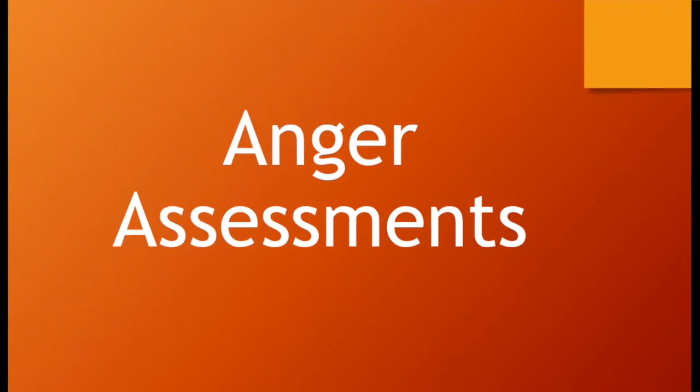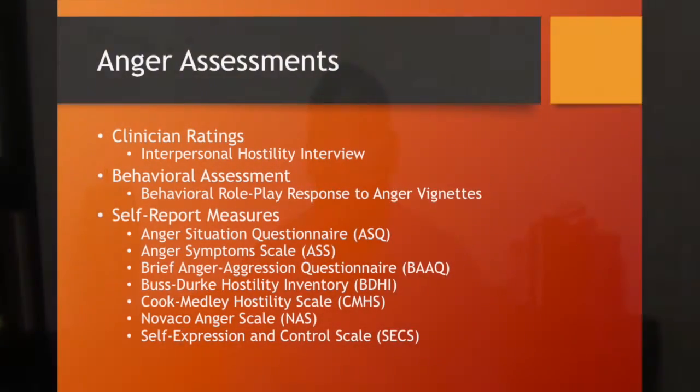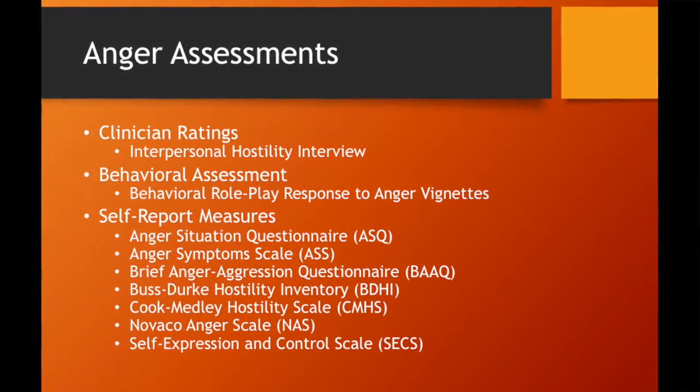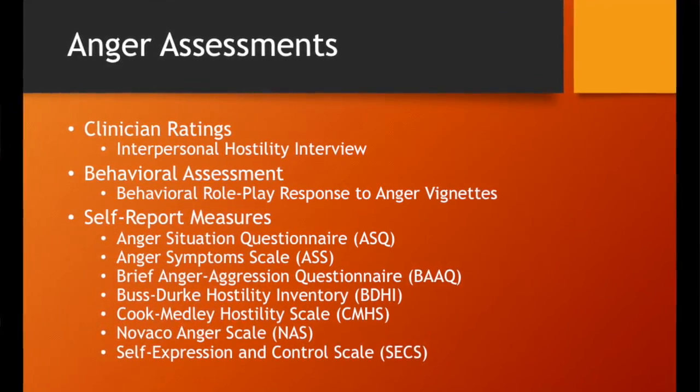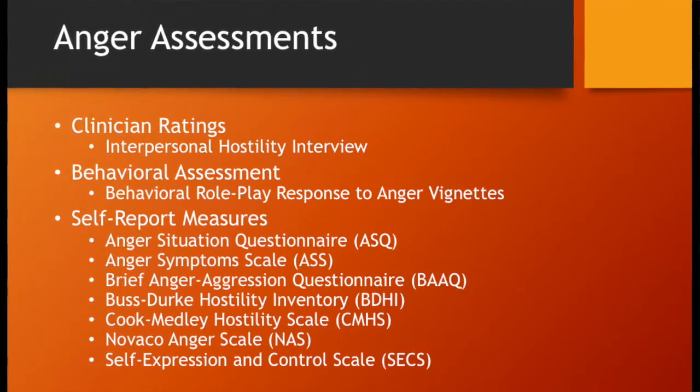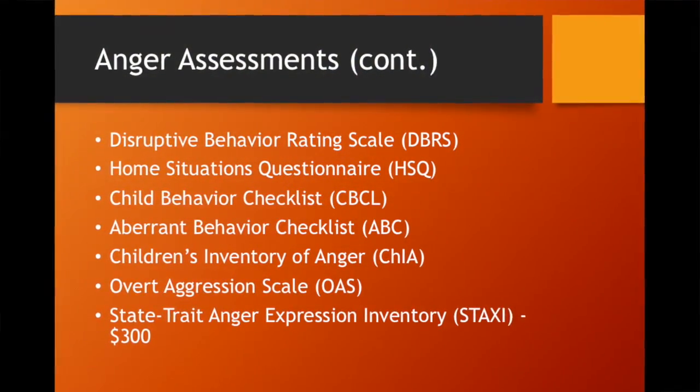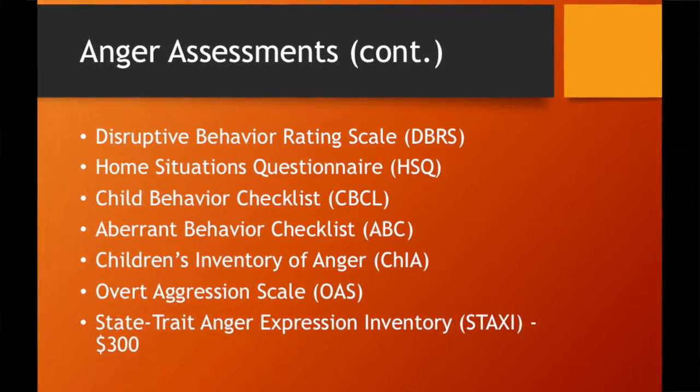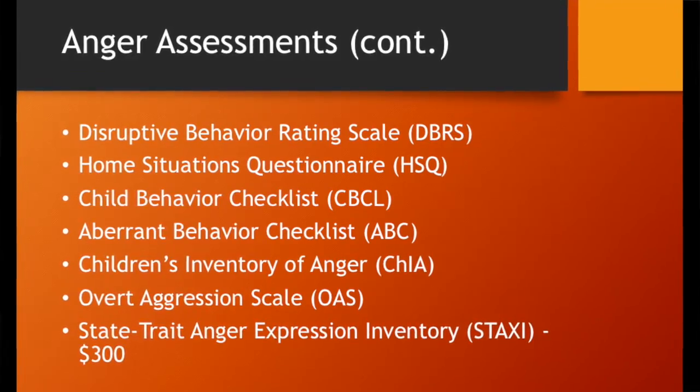Since anger and aggression can take on many forms, there are a multitude of assessments that can be administered to obtain meaningful data. There is not a gold standard assessment, but combining assessments will be conducive to accuracy. These include clinician-administered tools such as the interpersonal hostility interview, behavioral assessments, self-report measures, and parent and teacher questionnaires such as the disruptive behavioral rating scale — mainly used with ODD clients — and the home situation questionnaire, which is used for rating non-compliance within the home environment.